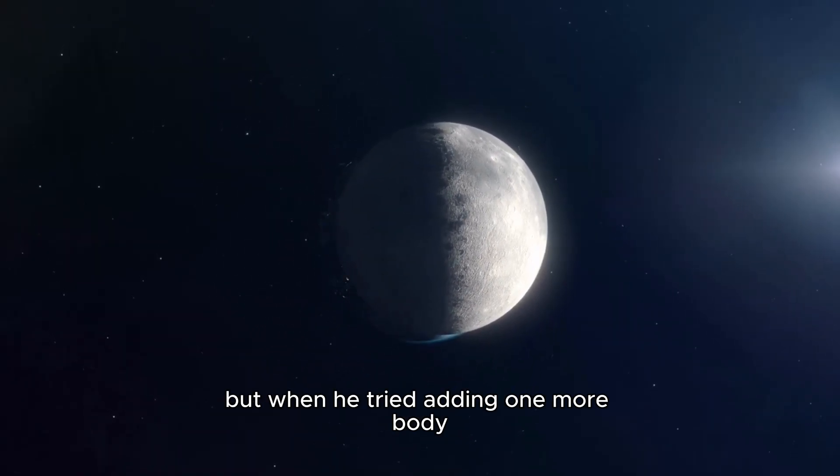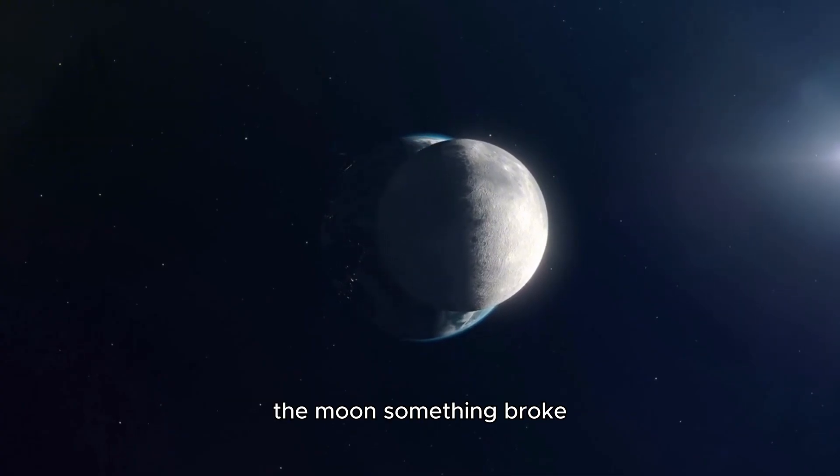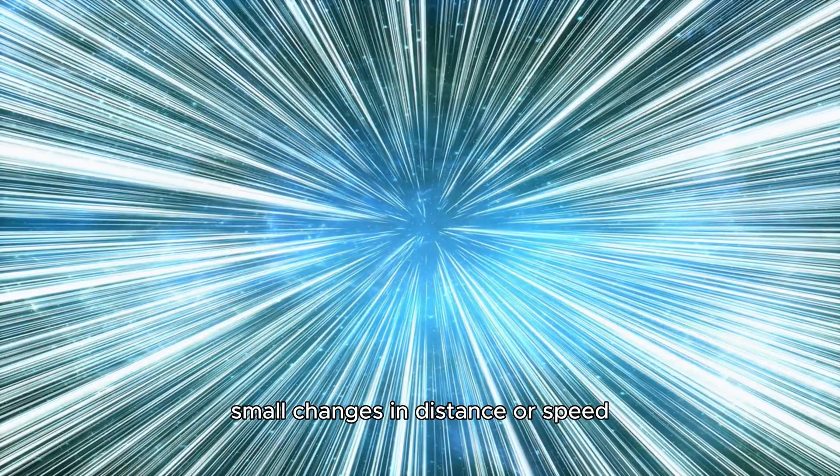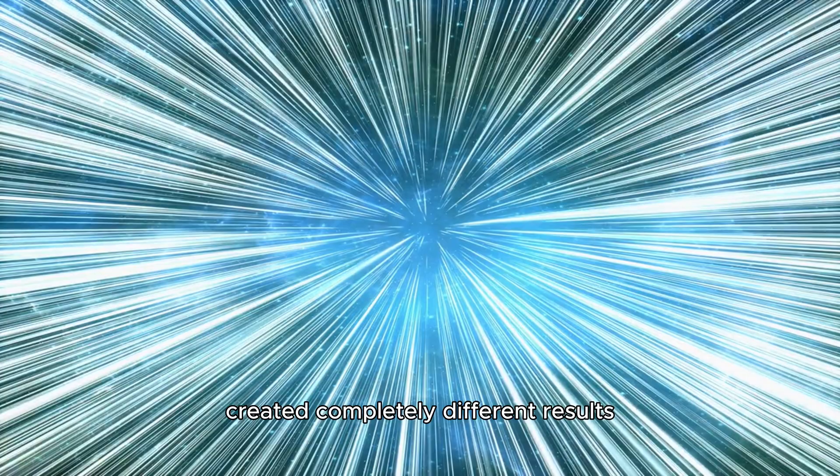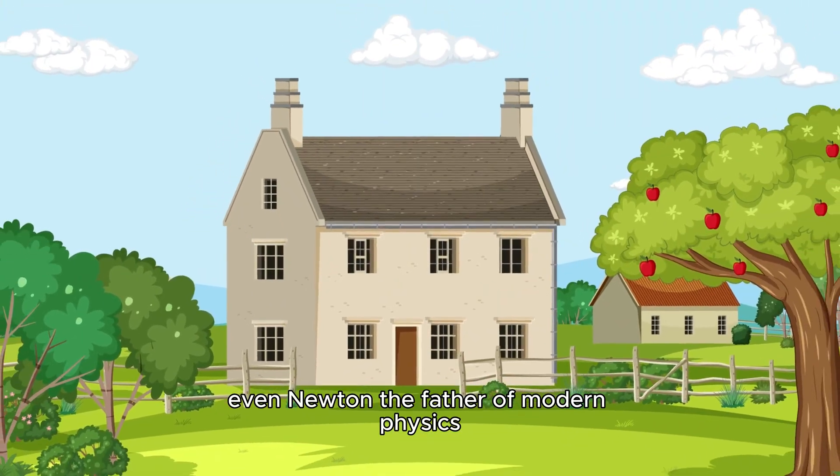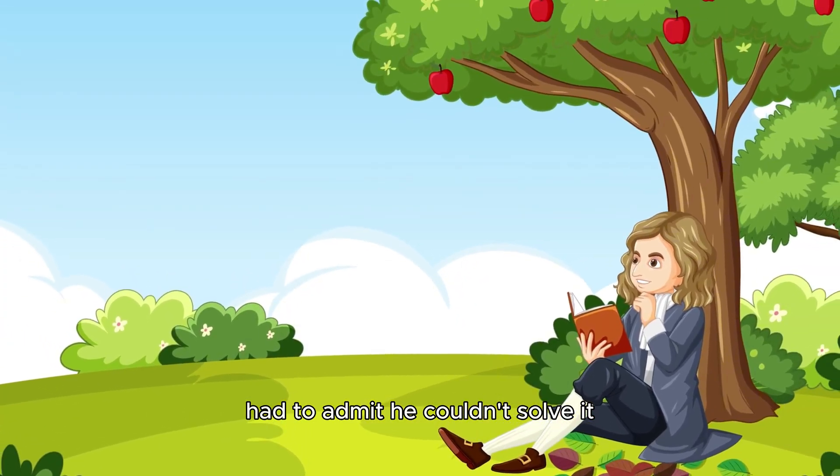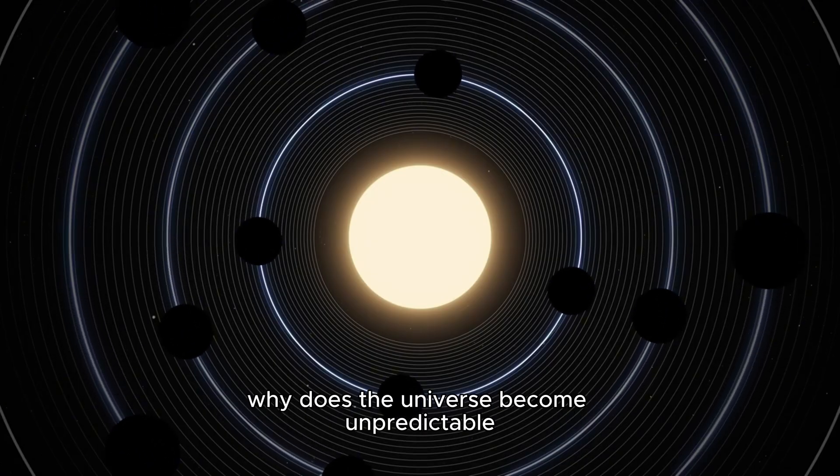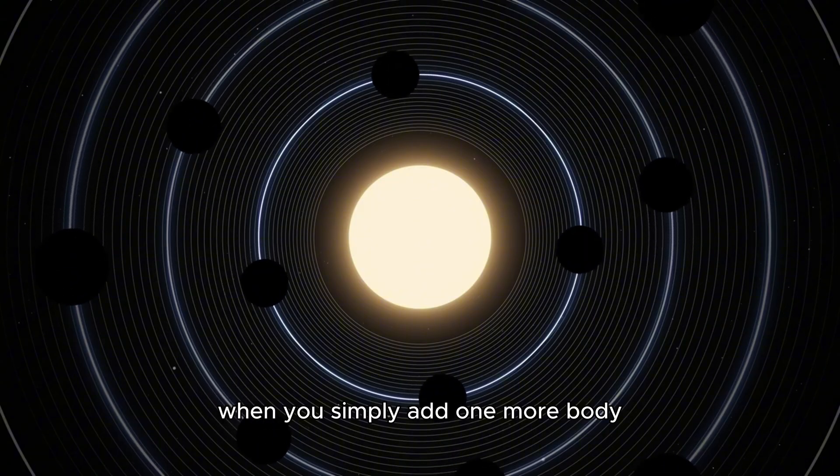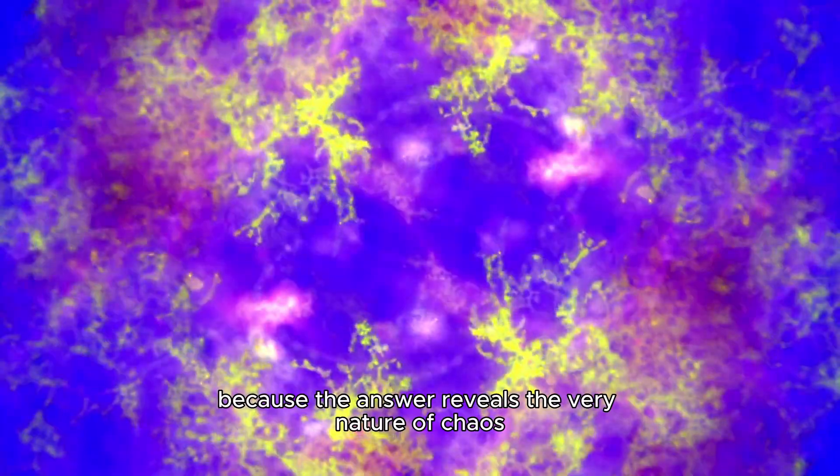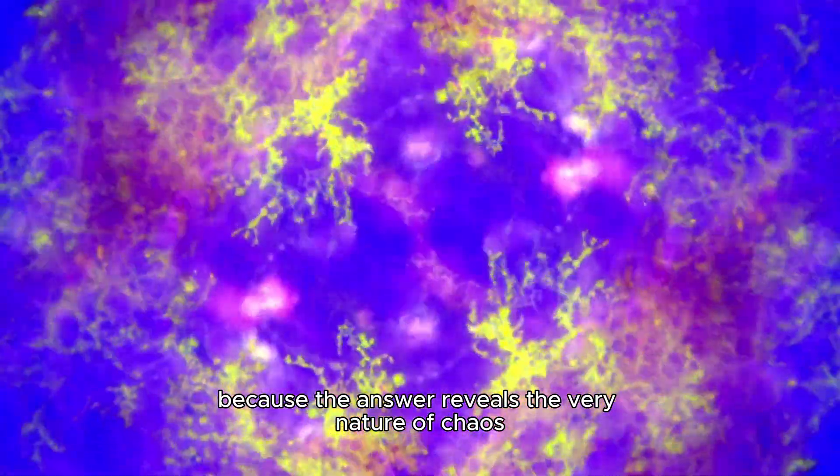But when he tried adding one more body, the moon, something broke. His equations began to spiral into impossibility. Small changes in distance or speed created completely different results. Even Newton, the father of modern physics, had to admit he couldn't solve it. Why does the universe become unpredictable when you simply add one more body? That's the loop we'll unravel, because the answer reveals the very nature of chaos itself.